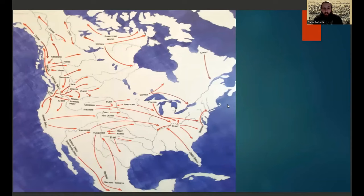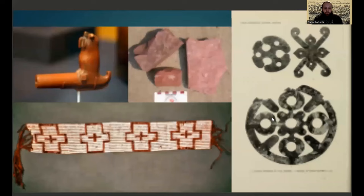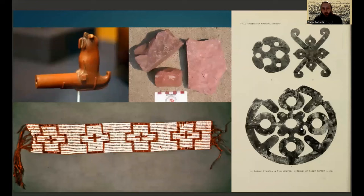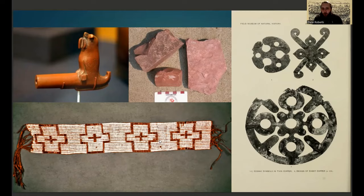The tribes of the northeastern woodlands also had access to a very widespread and highly developed trade network, where they would trade for things like copper from the Great Lakes, ceremonial pipes and the pipestone they were made from, as well as marine shells woven into belts with specific designs — essentially a type of writing — called wampum.